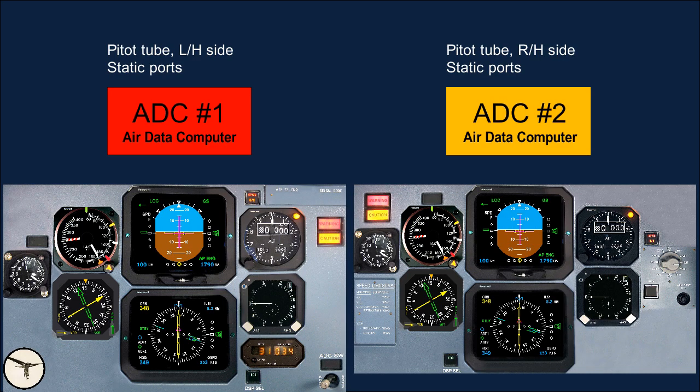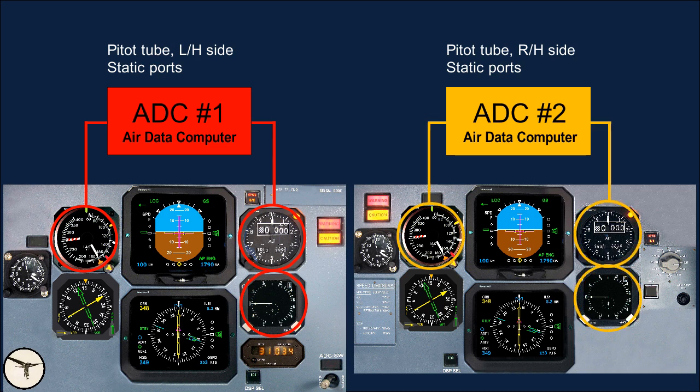The pitot-static system is connected to air data computers (ADCs). The airspeed indicator, altimeter, and vertical speed indicator on the captain side are connected to air data computer number one, and on the first officer side they are connected to air data computer number two. The instruments are of analog type but require electrical power to function.